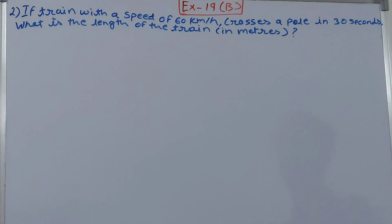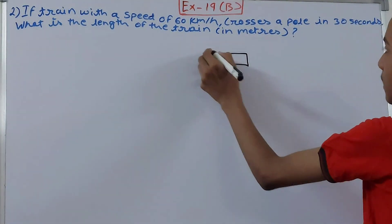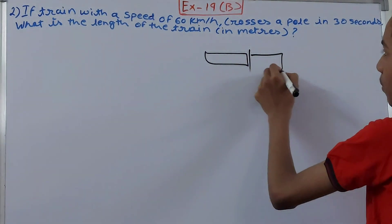The problem states: If a train with a speed of 60 kilometers per hour crosses a pole in 30 seconds, what is the length of the train in meters? So suppose this is my train and this is a pole, so it's crossing that pole.